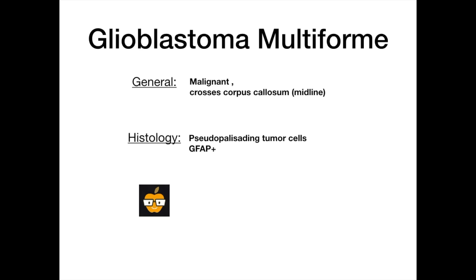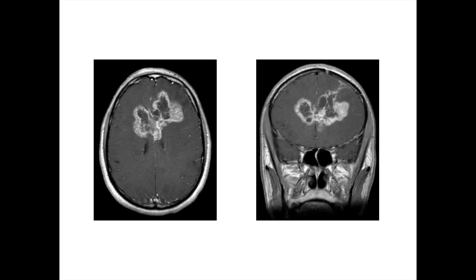On histology, you'll see something referred to as pseudopalisading tumor cells, and these stain positive for GFAP. Here's what a glioblastoma multiforme looks like — the tumor crosses the midline and creates what's called the butterfly appearance because it's symmetrical on both sides of the corpus callosum. So if you see anything resembling a butterfly or anything crossing the midline in the brain, it's going to be GBM.